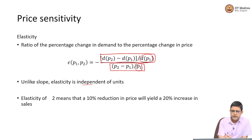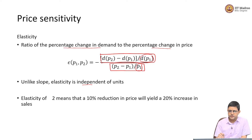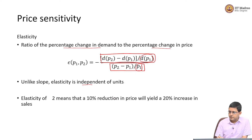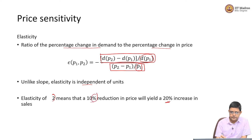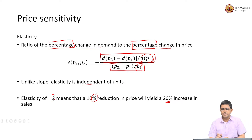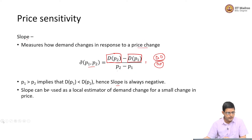To define it again: elasticity is percentage change in demand to percentage change in price. For example, an elasticity of 2 would mean that a 10% reduction in price increases demand by 20%. That is the meaning of elasticity of 2 — we are talking percentages, unlike slope where we talk about absolute change in demand to absolute change in price.